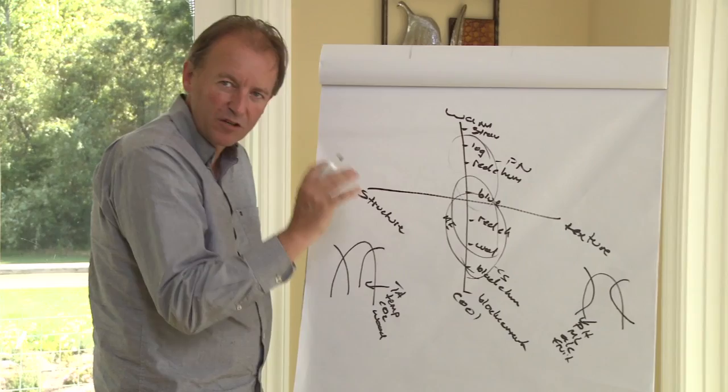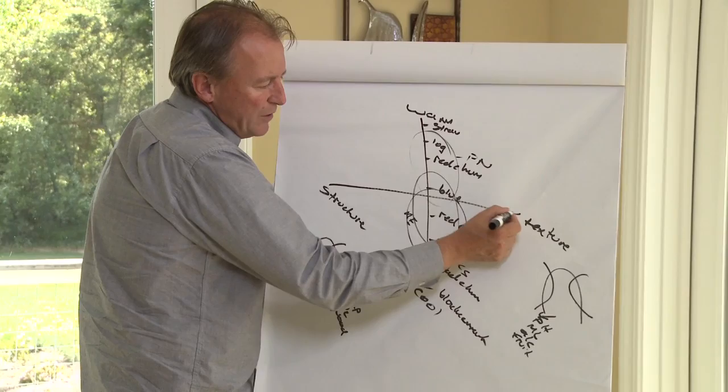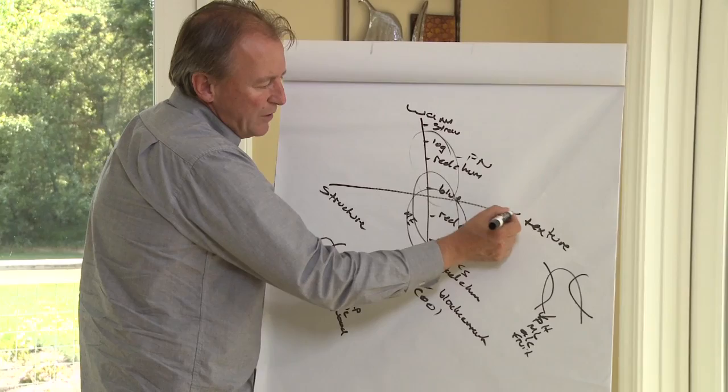So if I was to draw on this chart a Cabernet, it's going to be fairly highly textural. It's going to stylistically be in this realm here. So back down into the blackberry fruit, and fairly highly textural.